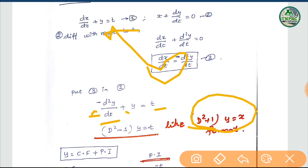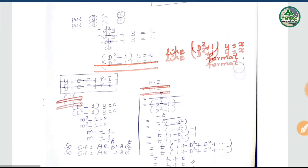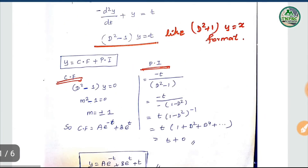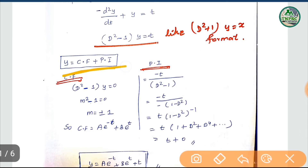We find the solution in two parts. First, find the complementary function. The minimum of the auxiliary equation is equal to 0. If we consider M-squared minus 1 is equal to 0, then M is equal to plus or minus 1. So the value of M is equal to plus 1 and minus 1, giving e-power minus t and e-power t.